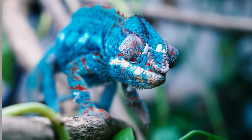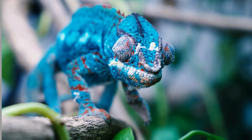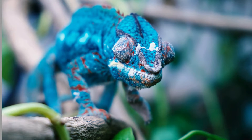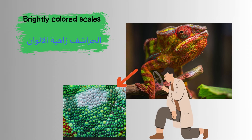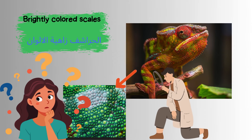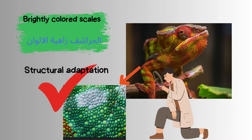What about the scales of the Panther Chameleon? The scales have colors like blue, red, white, and green — so it has brightly colored scales. These brightly colored scales are a structural adaptation.